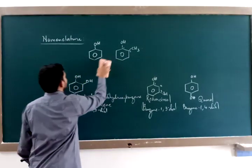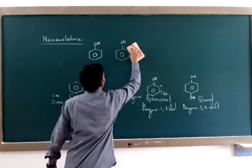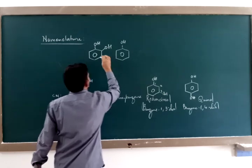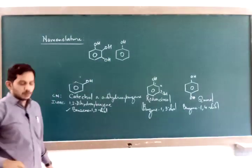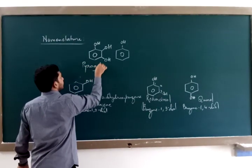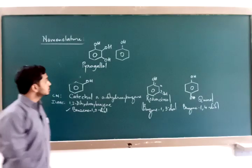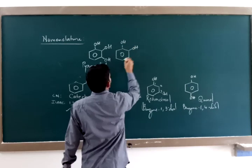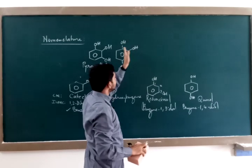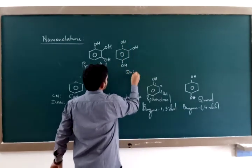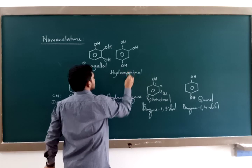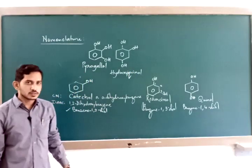Now let us see how trihydric phenols are named. A trihydric phenol contains three hydroxyl groups attached to it. The common name of the compound with three adjacent hydroxyl groups is pyrogallol. Another example with one gap has the common name hydroxyquinol — if the quinol structure has an additional hydroxyl group, it is called hydroxyquinol.